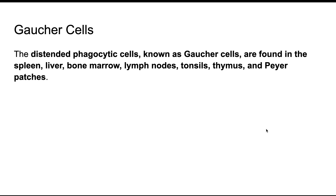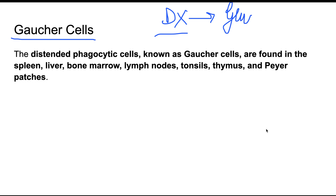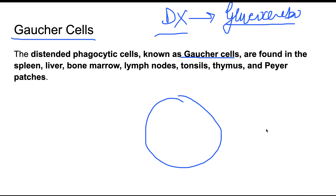The classical cells seen in Gaucher's disease and diagnostic of the disease are Gaucher cells. To diagnose Gaucher's disease, first check the glucocerebrosidase enzyme level — if it is lower, there is a possibility of Gaucher's disease. Second, look for the presence of Gaucher cells. These are distended phagocytic macrophages found in the spleen, liver, bone marrow, lymph nodes, tonsils, thymus, and Peyer's patches.